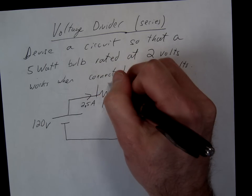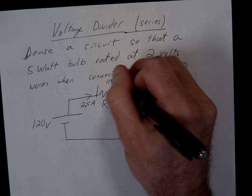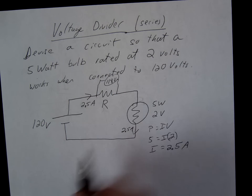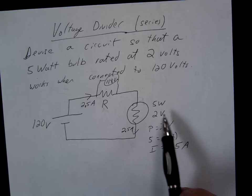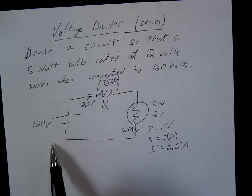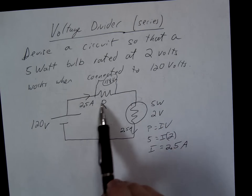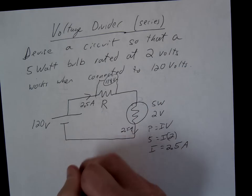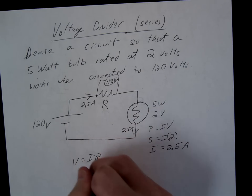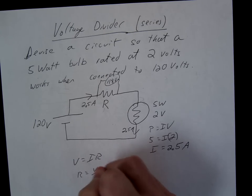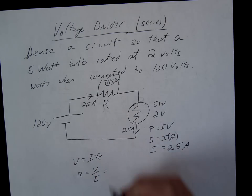So remember, the sum of these currents have to equal 0. So 120 minus 118 minus 2 gets us back down to 0. So this is 118. This is 2.5. And now we can just use V equals IR, R equals V over I to solve for that.